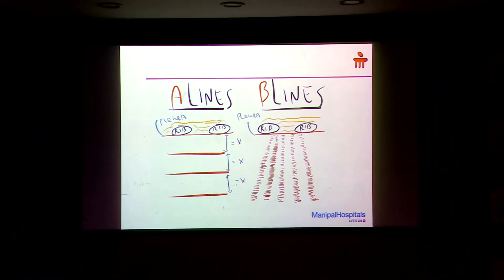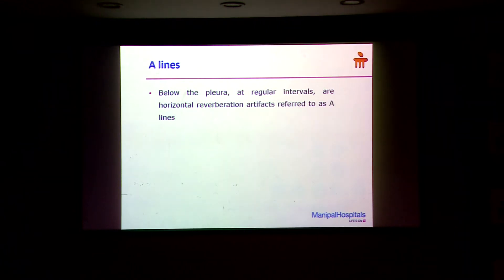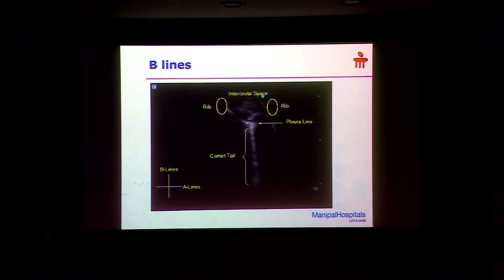What is a B-line? A B-line starts from the pleura and goes to the end of the probe. If any pathology or fluid is present, the A-lines will be obliterated and you will start getting B-lines. This is the real picture — that's the pleura and those are A-lines. That's how you will see A-lines; they are completely normal. And this is how you will see B-lines.